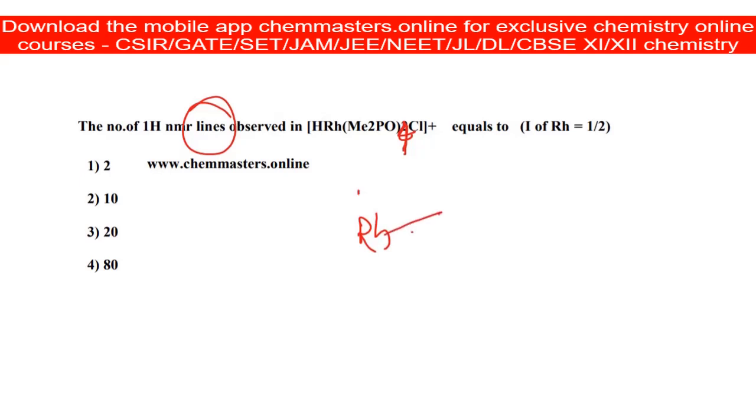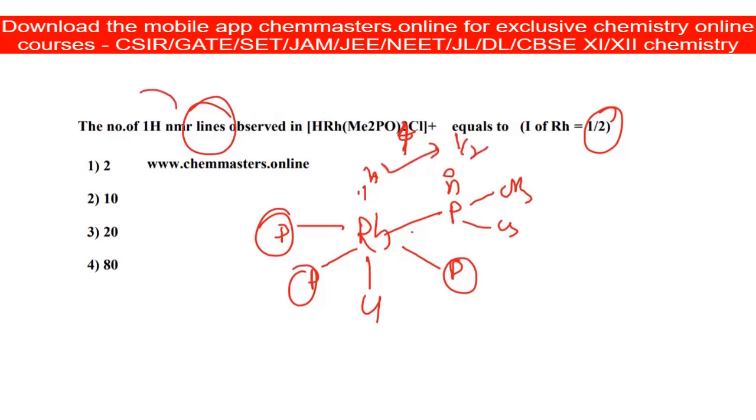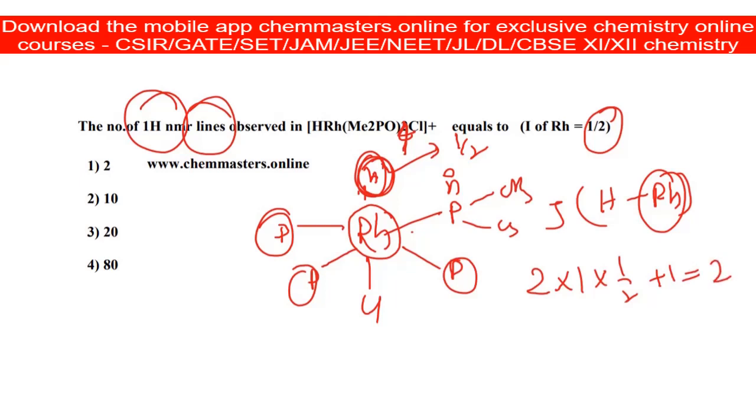Here is the hydrogen, there is a chlorine, here P double bond O, CH3. The same can be observed on all these three. Now we have given the nuclear spin of rhodium as half, and we know that hydrogen nuclear spin is half. So here we need to find number of HNMR signals for the hydrogen. We can see H-rhodium coupling is observed. How many rhodiums are there? Only one. That's why two into one into half plus one: two signals can be observed in HNMR.